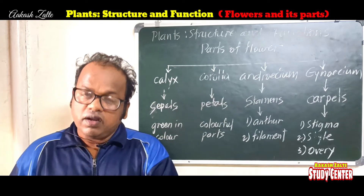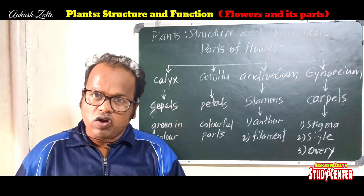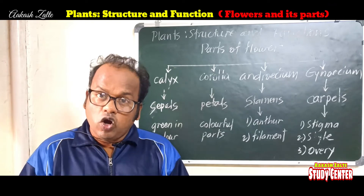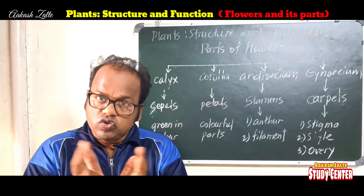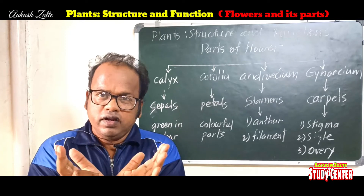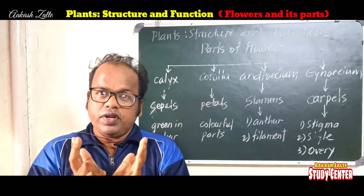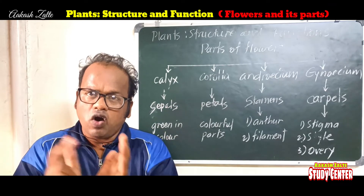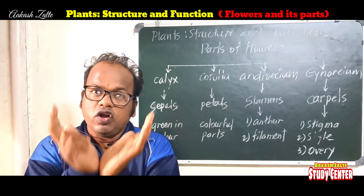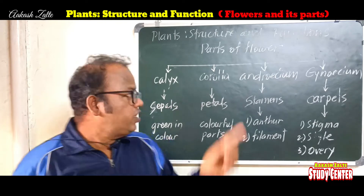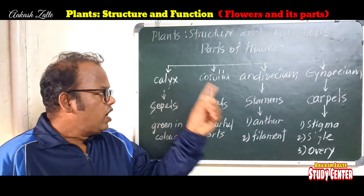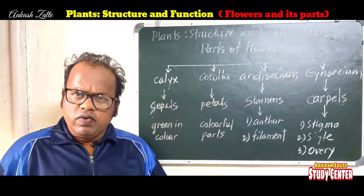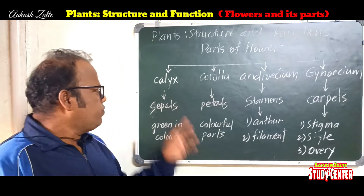So these 4 parts are called calyx, corolla, androsium and gynosium. Pedicel is the stalk of any flower, whether it is short or long, and the other end of the pedicel is swollen and expanded — it is called receptacle. The parts of all flowers are supported on the receptacle. Now let's study the first part: calyx.